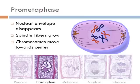Pro-metaphase used to be called late prophase, so you'll hear that terminology, but they both mean basically the same thing. At this point, the nuclear envelope completely disappears. The spindle fibers continue to grow from the centrioles, and the chromosomes begin to move toward the center of the cell.